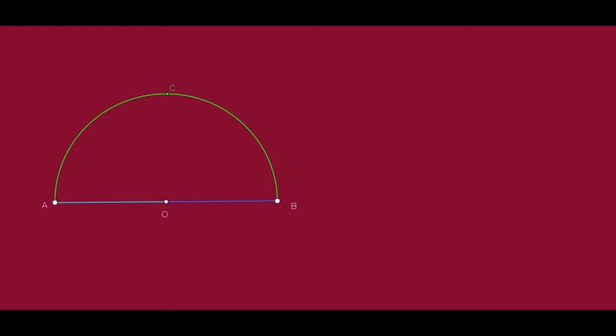This figure shows a diameter. O is the center. This is a semi-circle. This is a right triangle. AB is the hypotenuse. C is a point on the semi-circle. If we take a point C on the semicircle, A and B are the end points of the diameter.